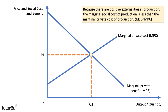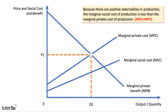So because there are positive externalities in production, the marginal social cost of supply will be less than the marginal private cost. One person's production, research, development and things brings down costs for other agents in society. Therefore, with a positive production externality, the marginal social cost is lower than the marginal private cost.